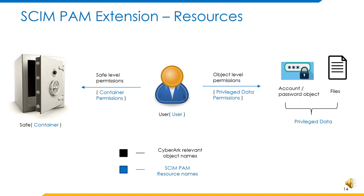The PAM extension recommends core schema that could be used by PAM solutions for their own SCIM implementations. Here is a correlation of various resource types provided as part of this REST API specification to the SCIM PAM-related objects. The core objects are safes, accounts, files and users. Safes are aptly given the resource type 'containers' as they are logical containers holding various passwords, files or other data. The resource type for account objects or files is 'privileged data', and they are treated as granular-level objects. Apart from core objects, we have linkage objects which refer to various kinds of permissions. For example, resource type for permissions on a container are called container permissions, and permissions on granular level objects like files or accounts are called privileged data permissions.